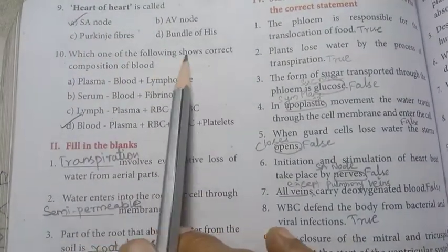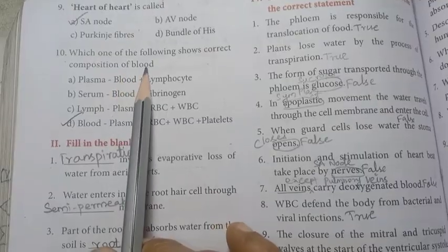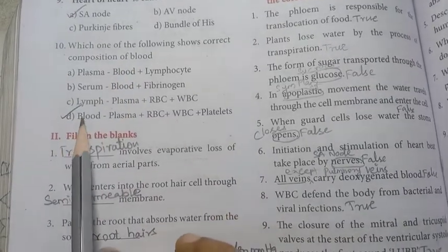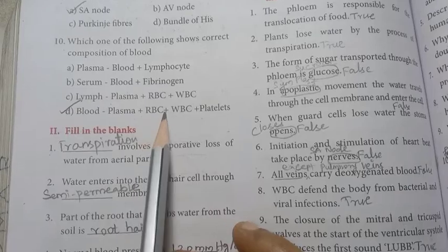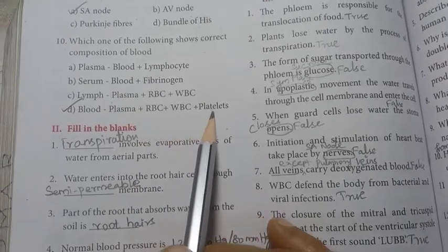Ten: which one of the following shows correct composition of blood? Blood. Answer is D option, blood that is plasma plus RBC plus WBC plus platelets.